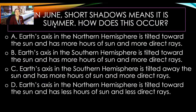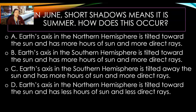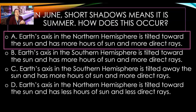Number two: in June, the shortest shadow means it is summer — how does this occur? Options are: Earth's axis in the northern hemisphere is tilted towards the sun and has more hours of sun and more direct rays; Earth's axis in the southern hemisphere is tilted towards the sun; Earth's axis in the southern hemisphere is tilted away from the sun; or Earth's axis in the northern hemisphere is tilted towards the sun but has less hours of sun. The answer is A — in June, summer in the north, the northern hemisphere has more hours of sun and more direct rays.